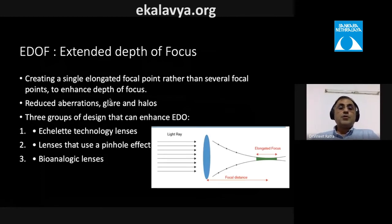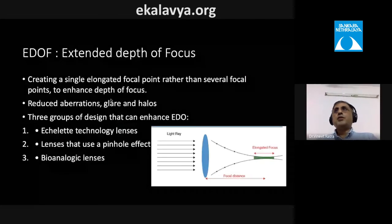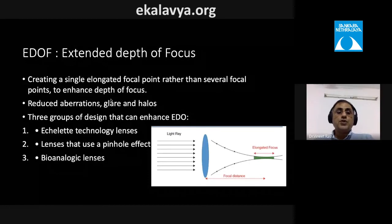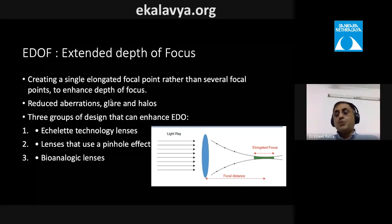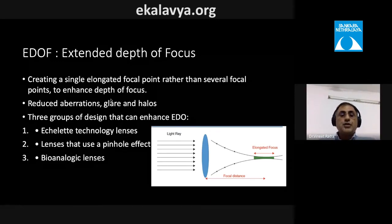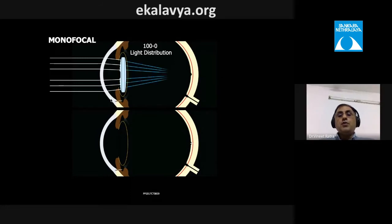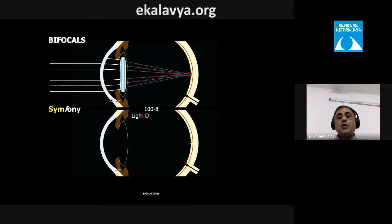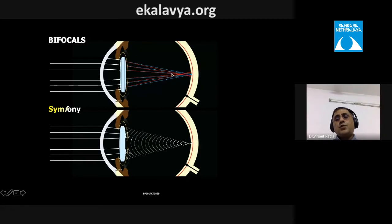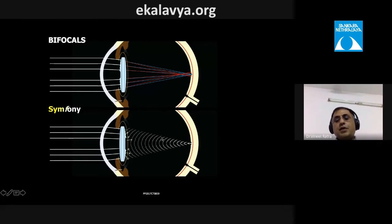Extended depth of focus (EDOF) IOLs — such as the TECNIS Symfony — create an elongated focal point rather than two discrete foci, providing a continuous range of vision with reduced halos and glare. Three types of technology underlie EDOF lenses. In a monofocal all light focuses at one point; in a bifocal it splits to near and far; an EDOF produces an elongated continuous focal range.